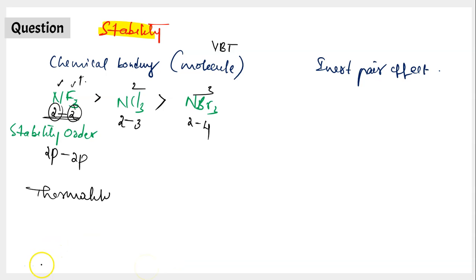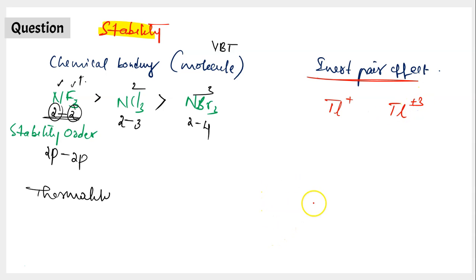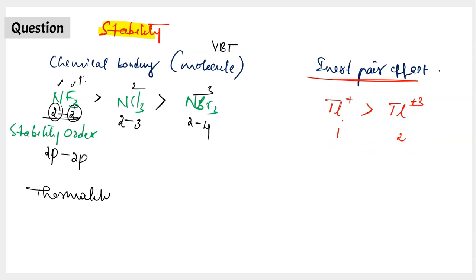Moving on to the second model of stability-based questions, which can be answered with the help of inert pair effect. Consider two species: Tl⁺ (thallium +1) and Tl³⁺ (thallium +3). Out of these two, which is more stable? Give a guess according to inert pair effect and let me know in the comments. The right answer is: between Tl⁺ and Tl³⁺, Tl⁺ is more stable. This can be understood with the help of inert pair effect.